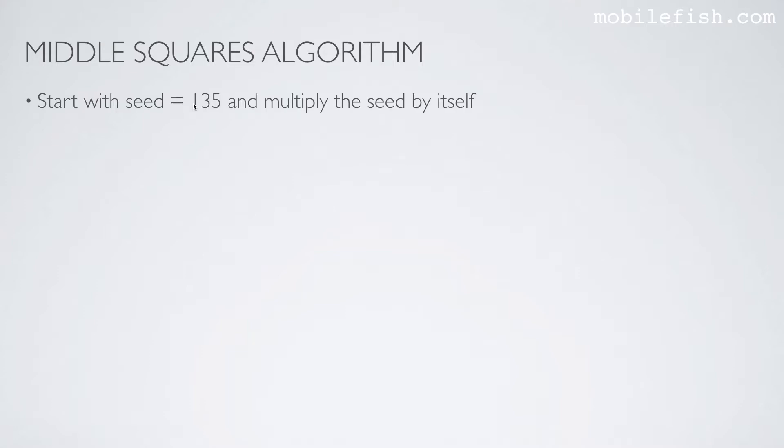You start with a seed value of 135 and multiply the seed by itself. As you can see over here, 135 times 135 and this is the result. You take the middle part and it will be part of the random number.